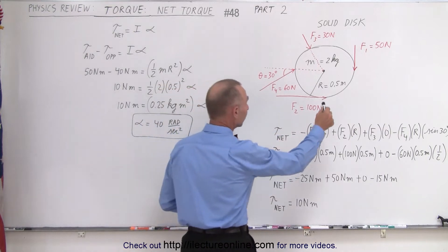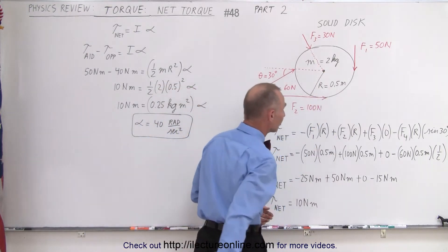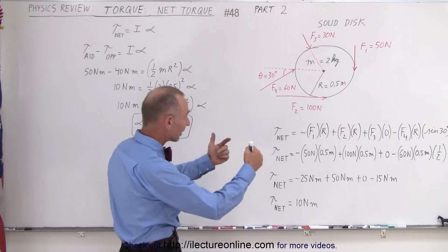So here we have an object, let's say a solid disc. It has a mass of 2 kilograms, a radius of 0.5 meters, and there's four forces acting on it.